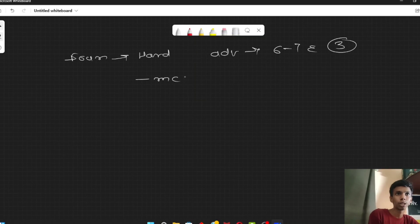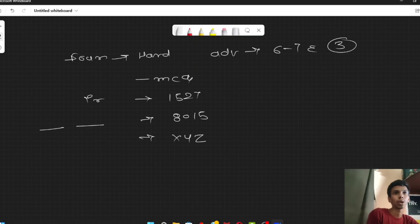For some questions, you have to find out the number, like 1527. Or if you have logical reasoning, the code is written like 80512 or XYZ. In every section, there were 4-5 questions which didn't have options, and you had to write the answer.